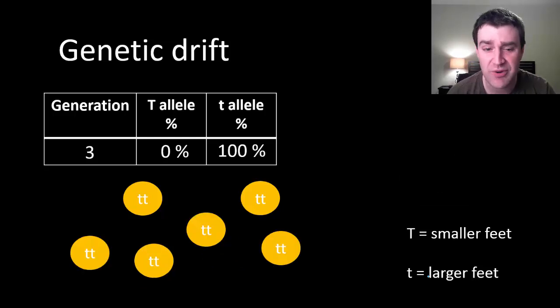Let's say this is the next generation and we see that actually now all of them have larger feet. More importantly, the smaller allele, the smaller foot allele capital T, has completely disappeared from the gene pool.